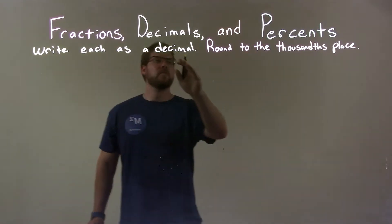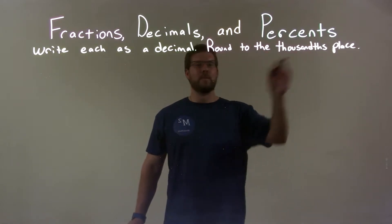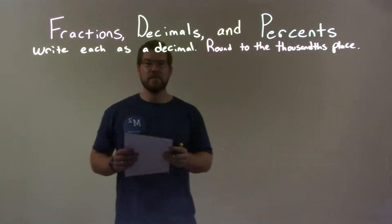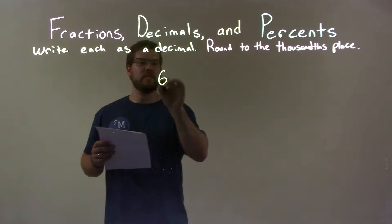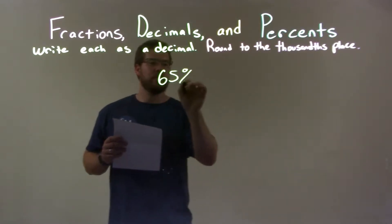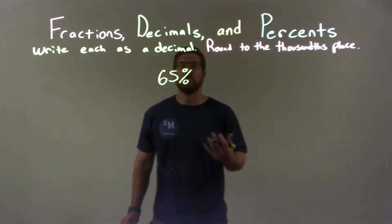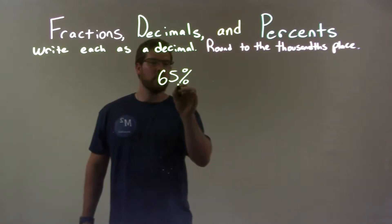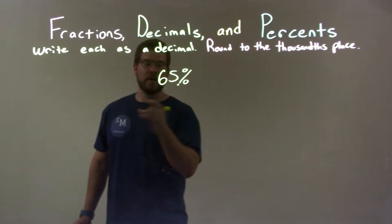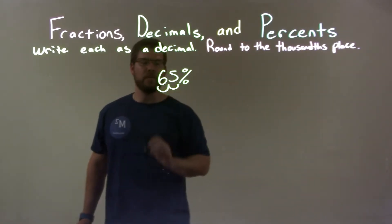We're going to write each as a decimal and round to the thousandths place. So, if I was given this percent, 65%, well I need to convert this to be a decimal. So there's a point right here, I need to move it two spots to the left. One, two, okay?